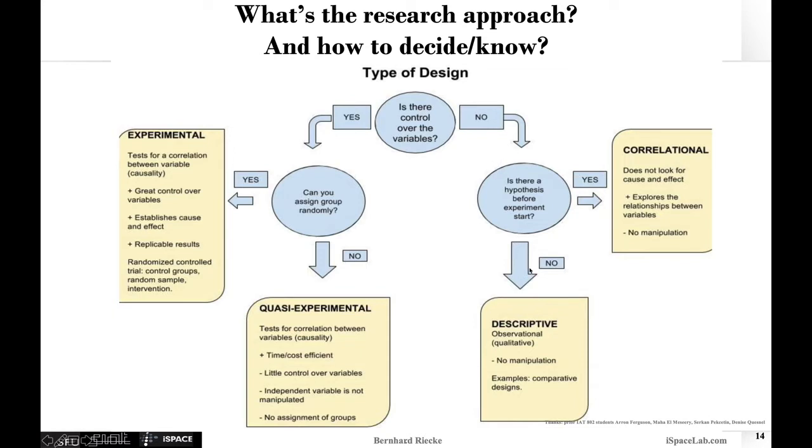This could be descriptive research. If you did not have a clear hypothesis before the experiment, it could be more explanatory research, comparative design and so on. Then you're in the range of more descriptive observational research. This could be qualitative, quantitative, or mixed methods. If you don't have manipulation and no pre-designed hypothesis, then it's more in the range of descriptive research.